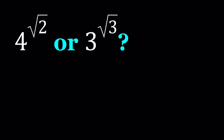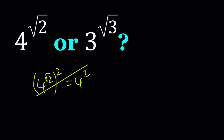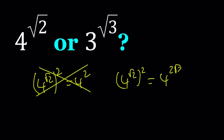Can I square 4 to the power square root of 2 to get 4 to the second power? The answer is no, you can't do that. If you square 4 to the power root of 2, you're just going to get 4 to the power of 2 root of 2, which is not actually very helpful. So we have to use a different approach.